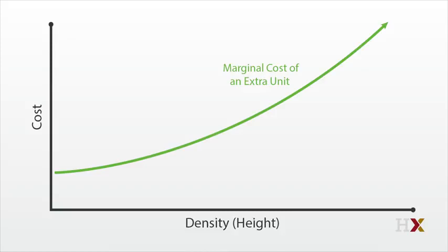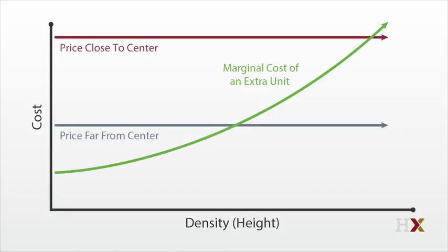So we've drawn a cost curve for building, and every building at every location faces a distinct price created by the demand for proximity. Let's draw two lines reflecting the price close to the city center, which is high.